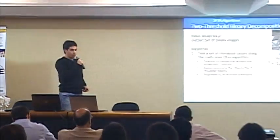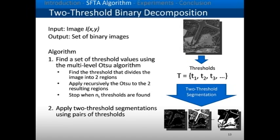The decomposition algorithm takes a grayscale image as input. The first step is finding a set of thresholds using a multi-level OTSU algorithm. We apply the regular OTSU algorithm to find the threshold that divides the image into two regions, then apply OTSU recursively on each resulting region to obtain the remaining thresholds. We stop when we reach the desired number of thresholds, denoted n_t, which is a user-defined parameter.